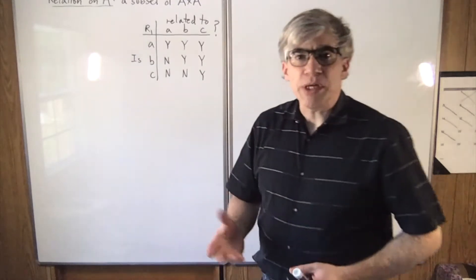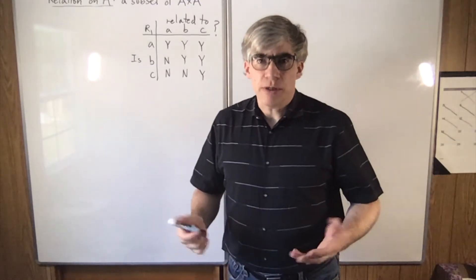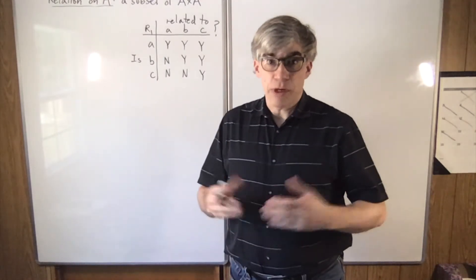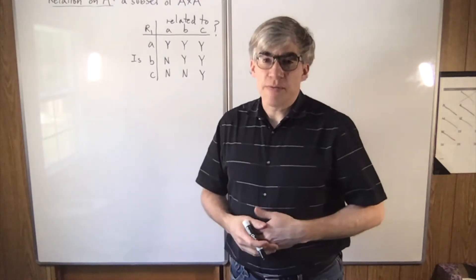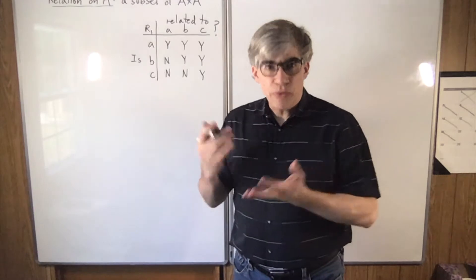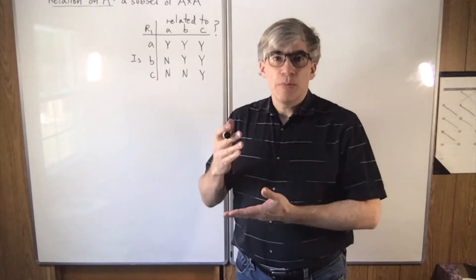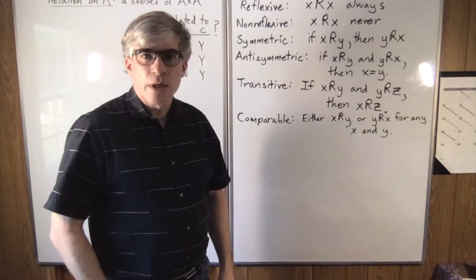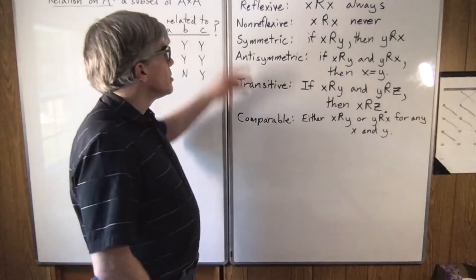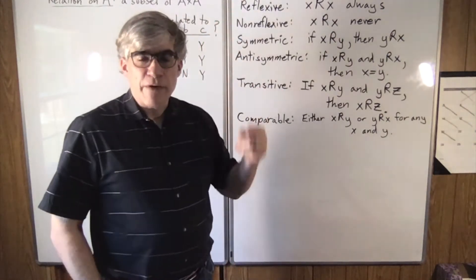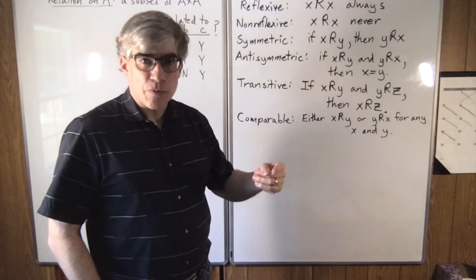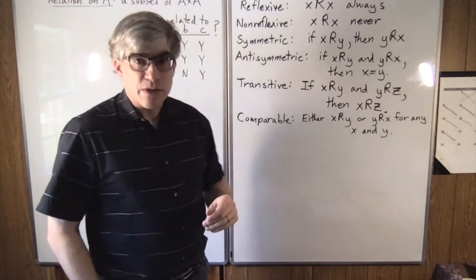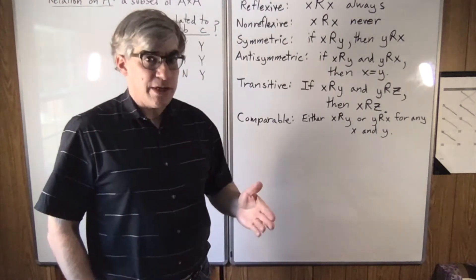Relations can have different properties. An equal sign is a relation. Less than is a relation. Subset is a relation. Being related by blood is a relation. So what are the common properties? Here they are. Reflexive: if everything is always related to itself, that relation is reflexive.